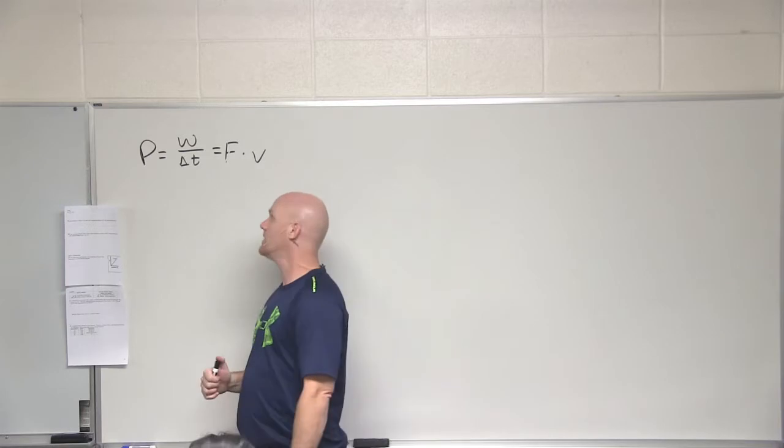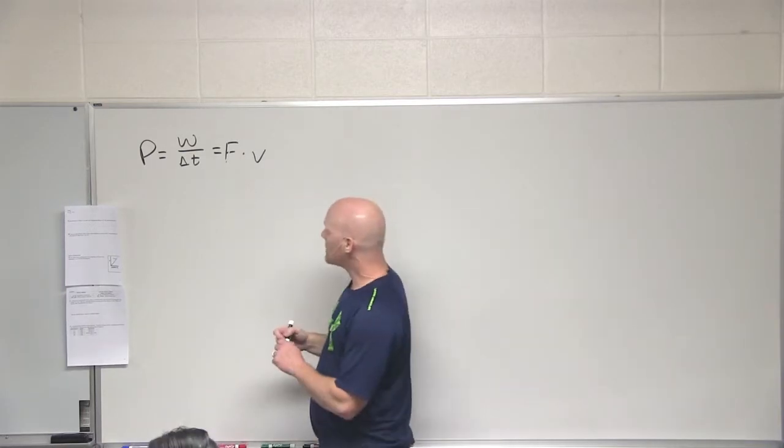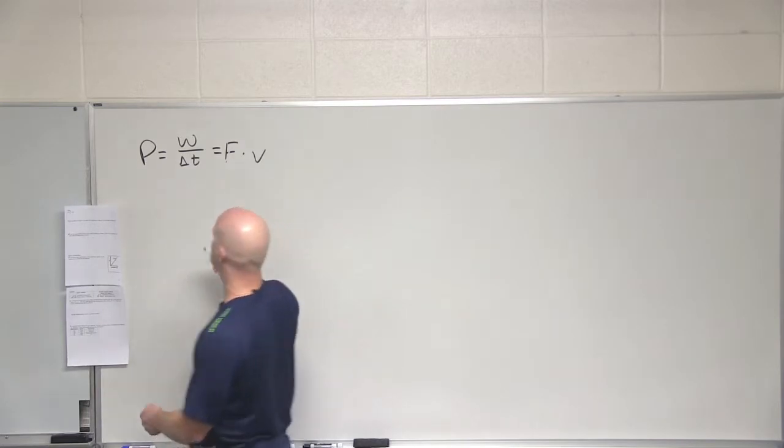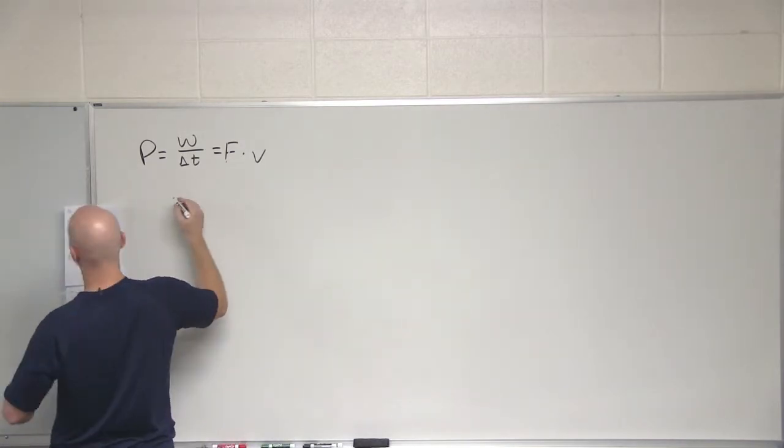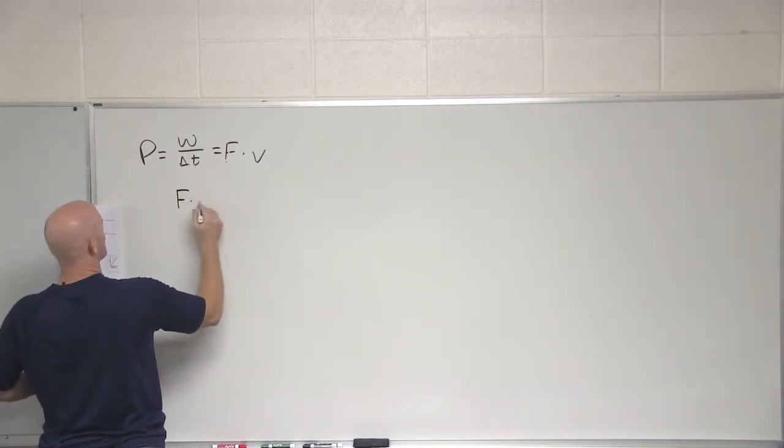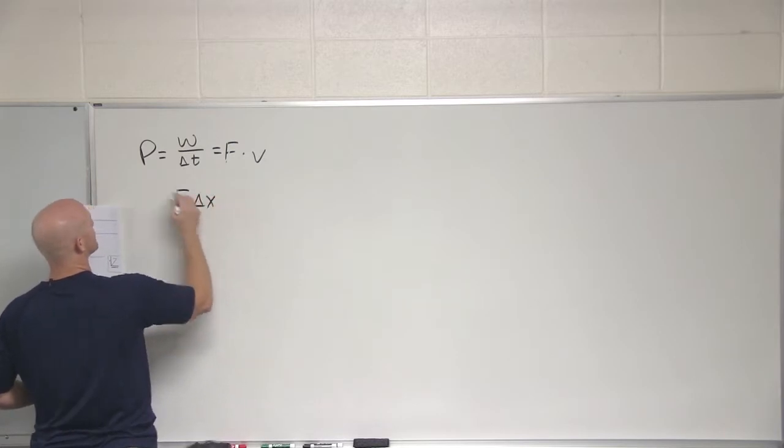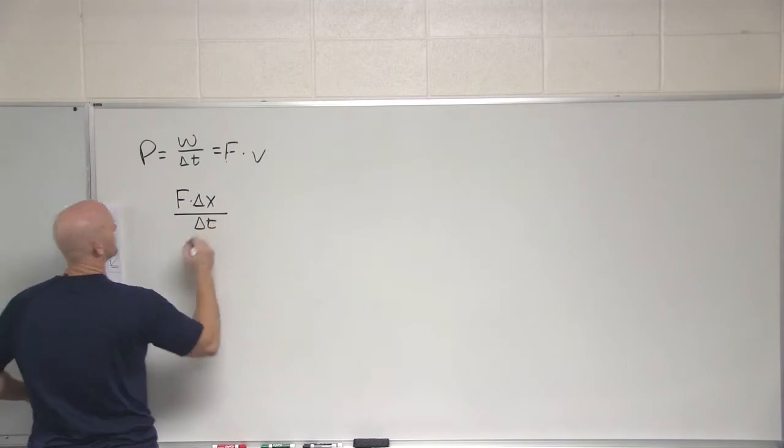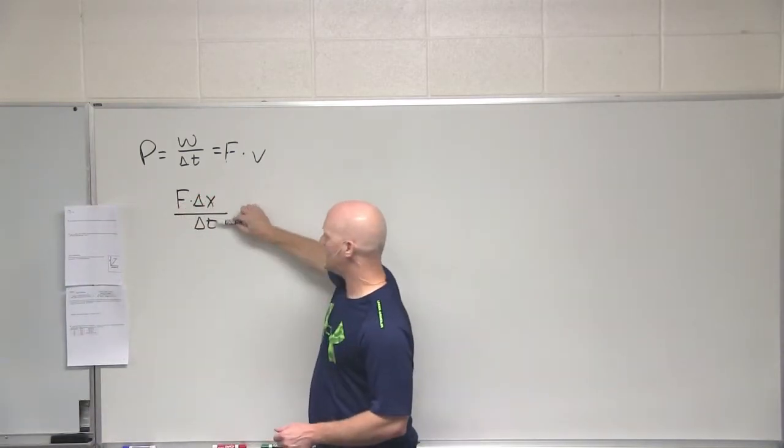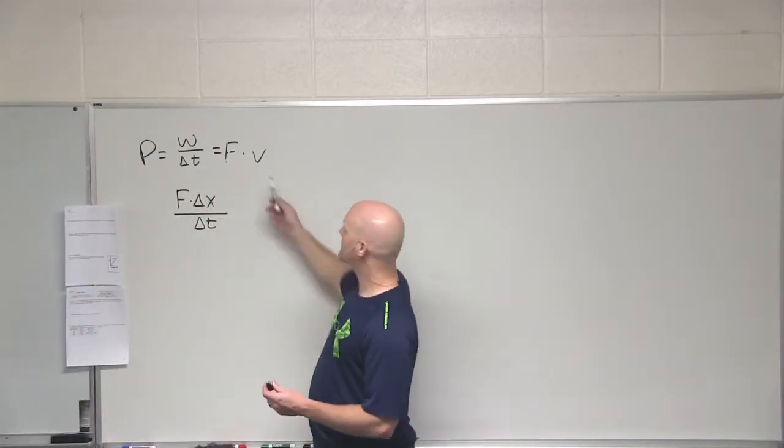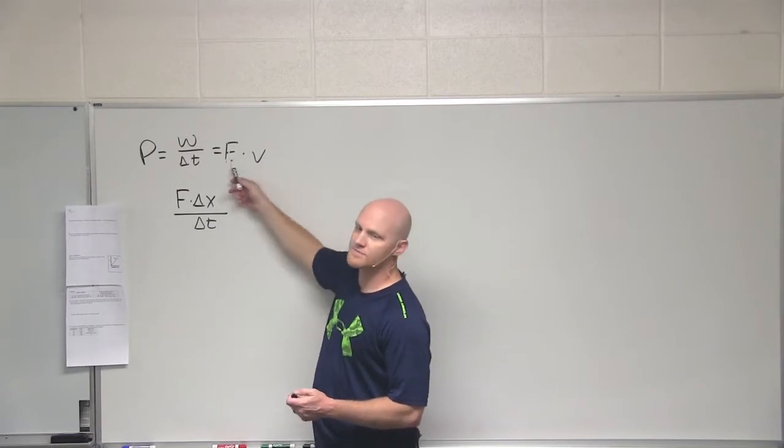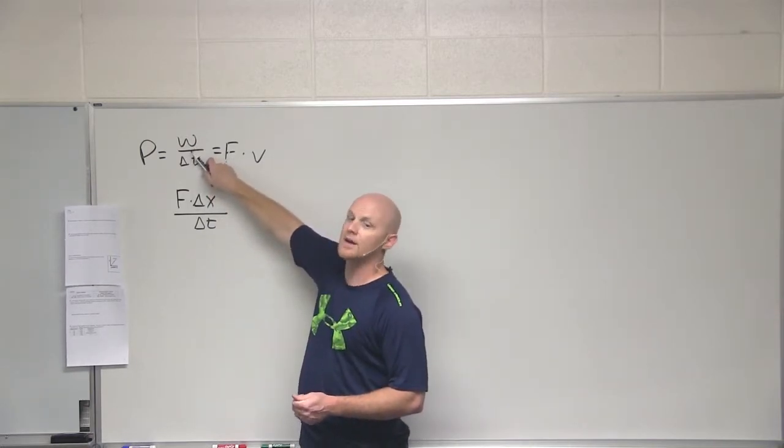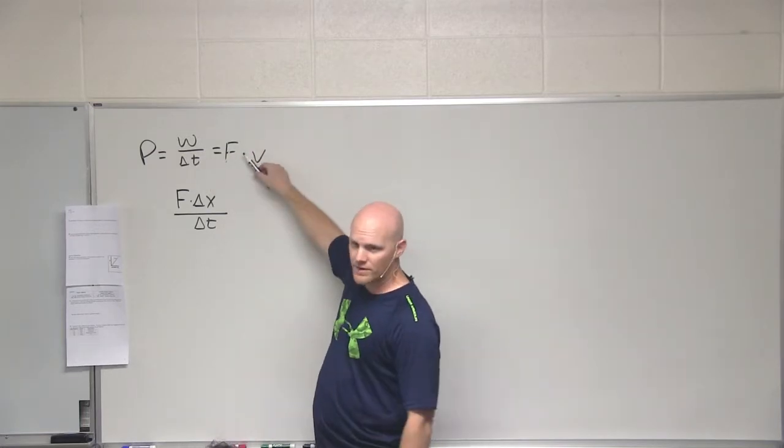If you look at the definition of work - force times displacement, which I'll make delta x - then power could be written as force times delta x over delta t. But what's delta x over delta t? Velocity. So you could also write power as force times velocity. That's where that comes from. This is by far the more common definition, but if this one doesn't work, you should have this one in your back pocket ready to go as well.